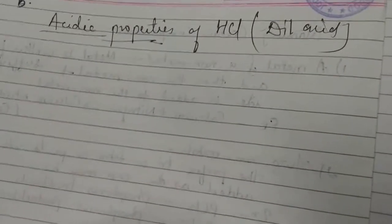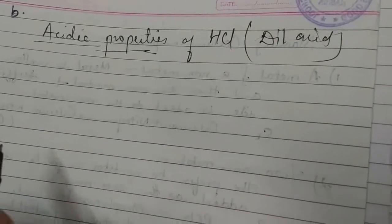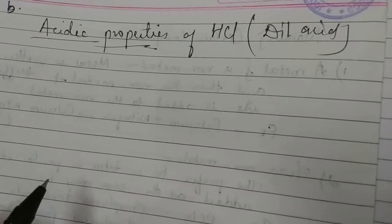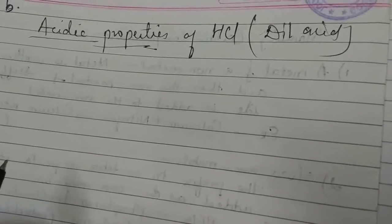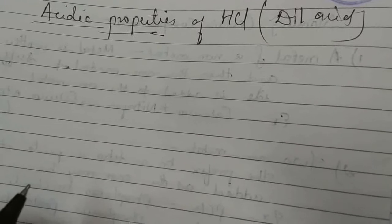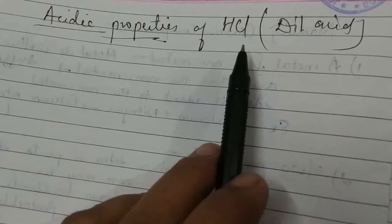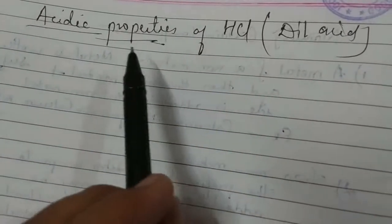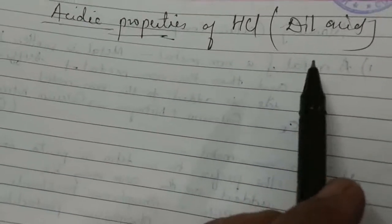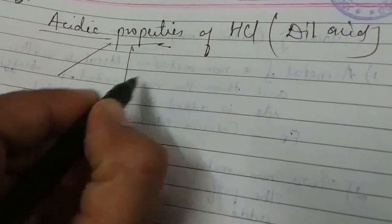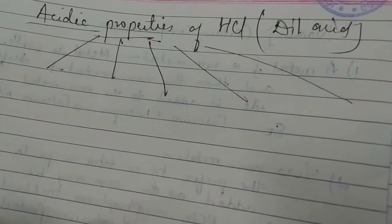Good morning students. As you know, we have started compound number one, that is HCl. In that lesson we have seen the introduction, physical properties, laboratory preparation, and the fountain experiment. Today we are going to see the acidic properties of HCl. While going through all these properties, the acid we use should be dilute acid. First, let us see the five basic general reactions.